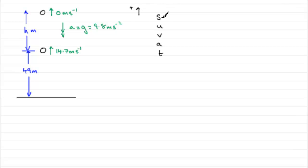Now what is the displacement S then? Well S is going to be plus h so we'll put that in as plus h metres. U, the initial velocity, will be plus 14.7 so we've got 14.7 metres per second there. The final velocity is 0, 0 metres per second.